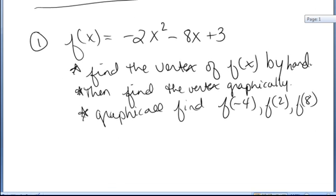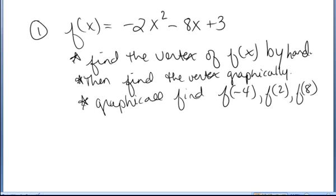In the first example, we have the function f(x) equals negative 2x squared minus 8x plus 3. I notice that this is a quadratic function. It has the form ax squared plus bx plus c, where a is negative 2, b is negative 8, and c is 3.